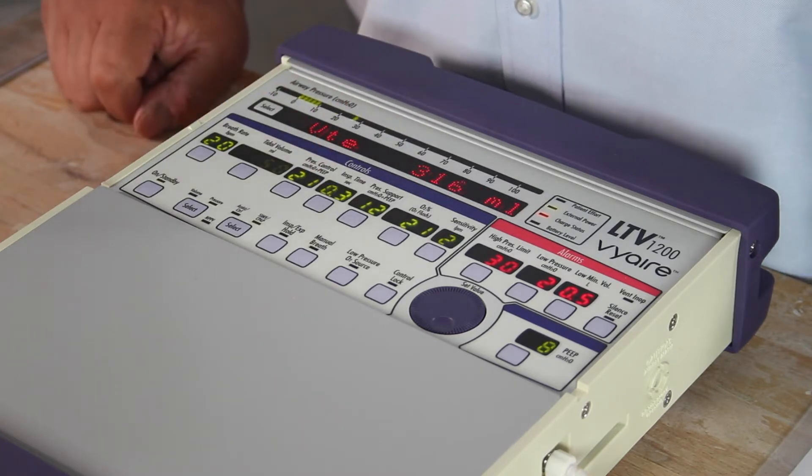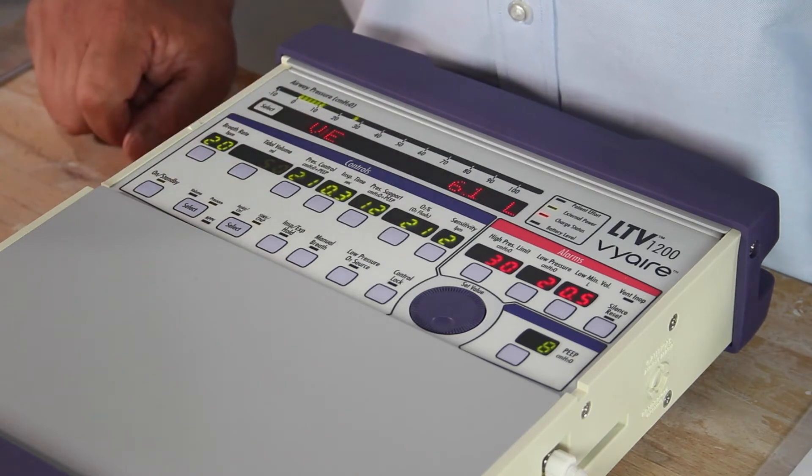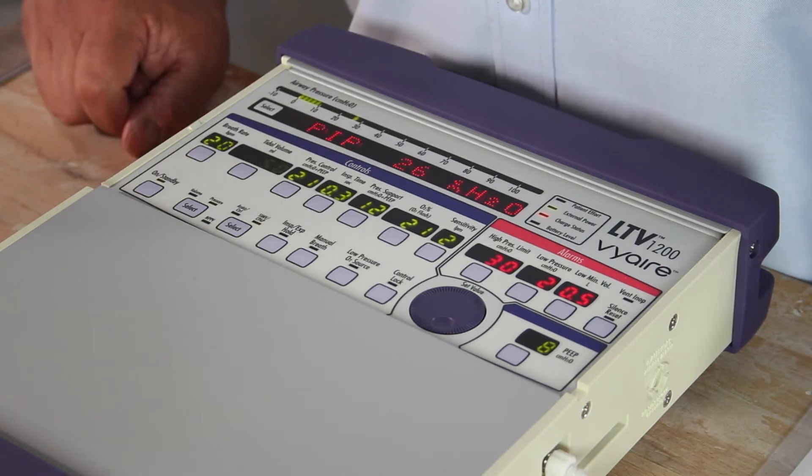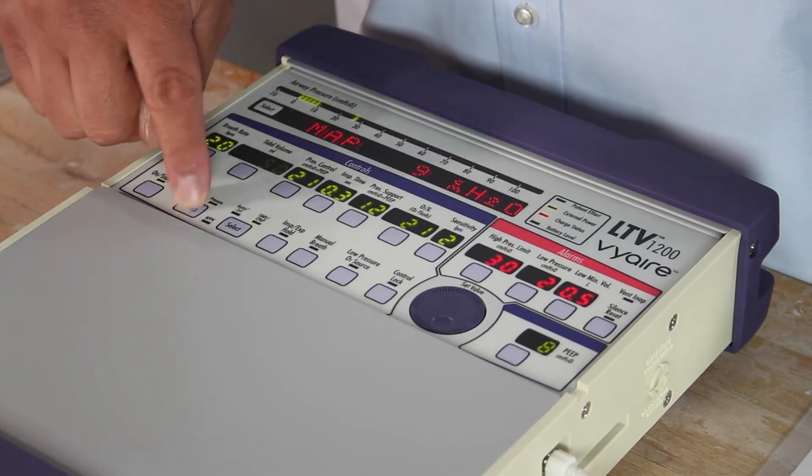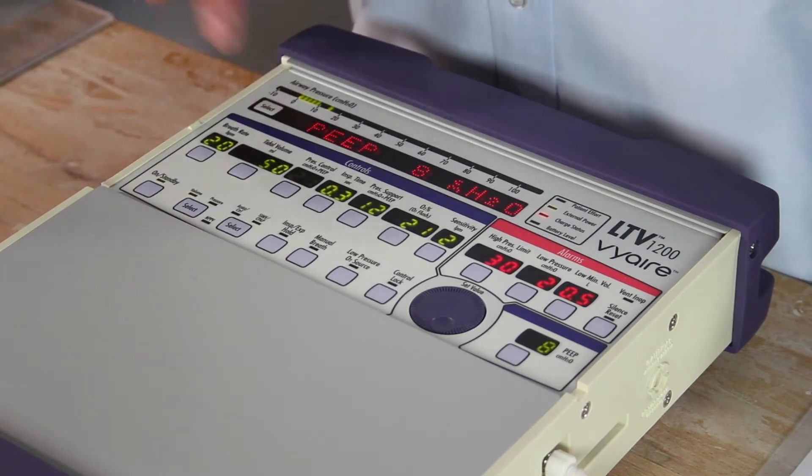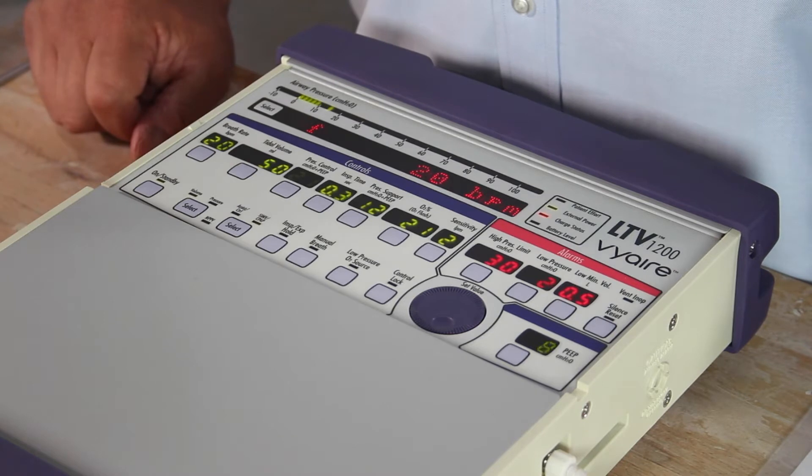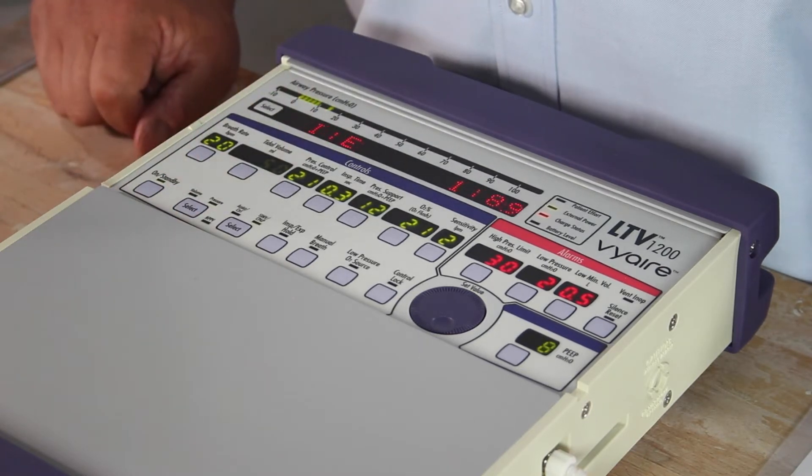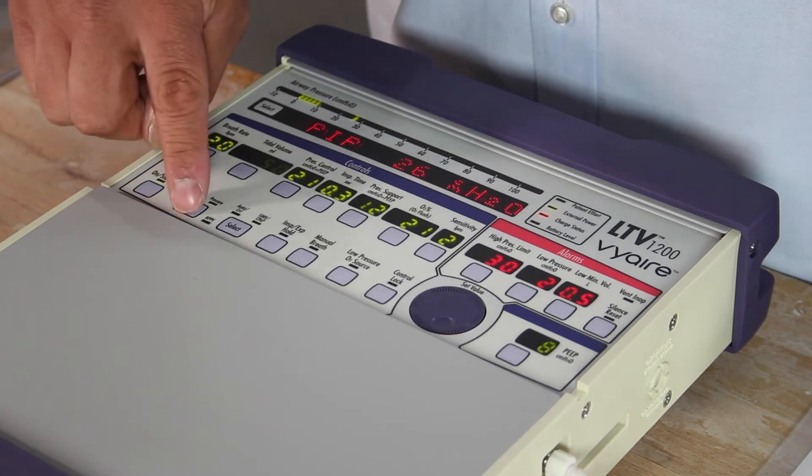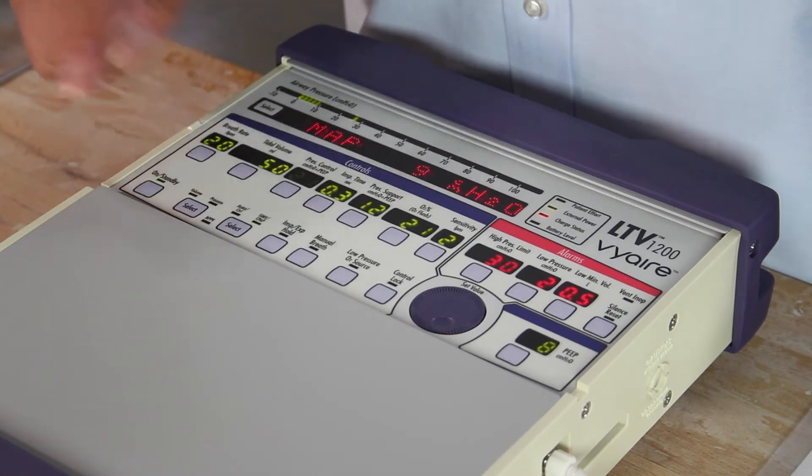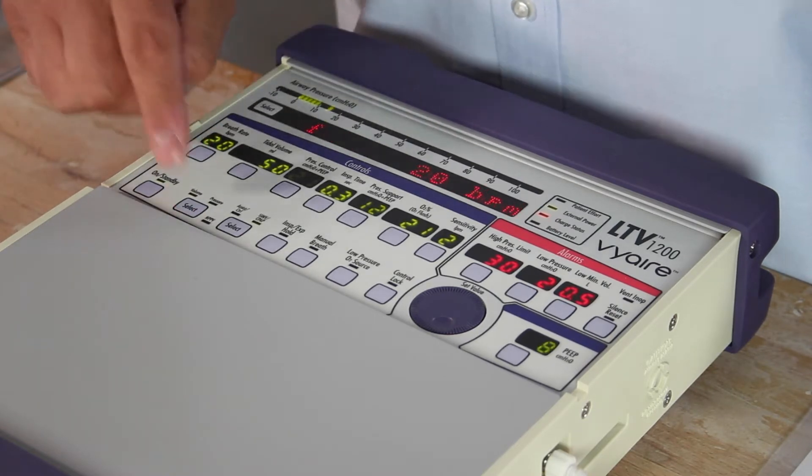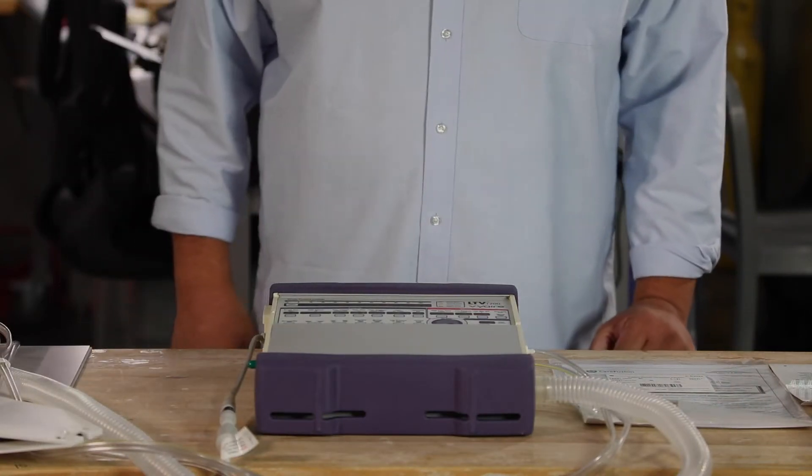I'm going to switch from pressure to volume. Simply press once. It's blinking volume. I have to press twice, one more time to confirm. And we are now in volume. Press again, pressure is blinking. I press one more time and we're back in pressure control. Let's do that again. Press once, press again to confirm. I am now in volume ventilation. Switch back to pressure, press once, confirm. I am now back in pressure control.